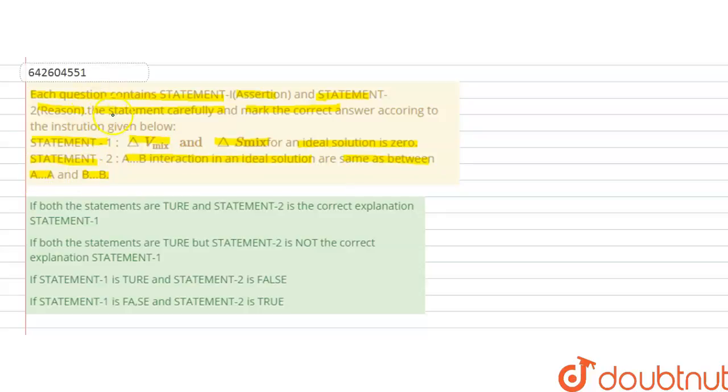So in this question, we are given two statements, one is assertion and the other is reason. So we have to choose whether these statements are correct or not, and whether statement 2 is correct explanation for statement 1 or not.